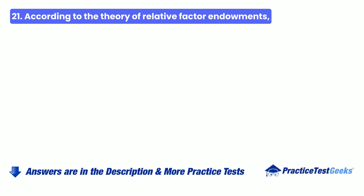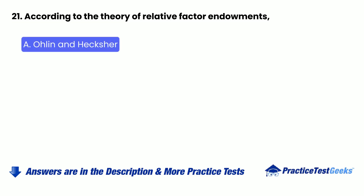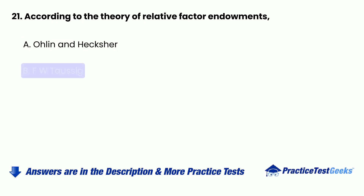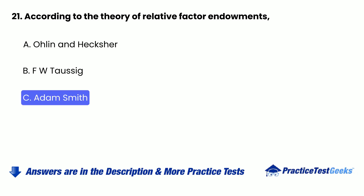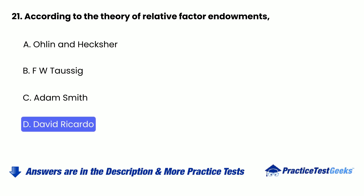Question 21: According to the theory of relative factor endowments — A. Olean and Heckscher, B. F.W. Taussig, C. Adam Smith, D. David Ricardo.